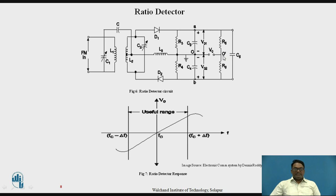Here, we are considering a point O which acts as an operating point for the circuit. The working generally depends upon this operating point, which is connected after the RC circuit and across which the output V0 is taken.